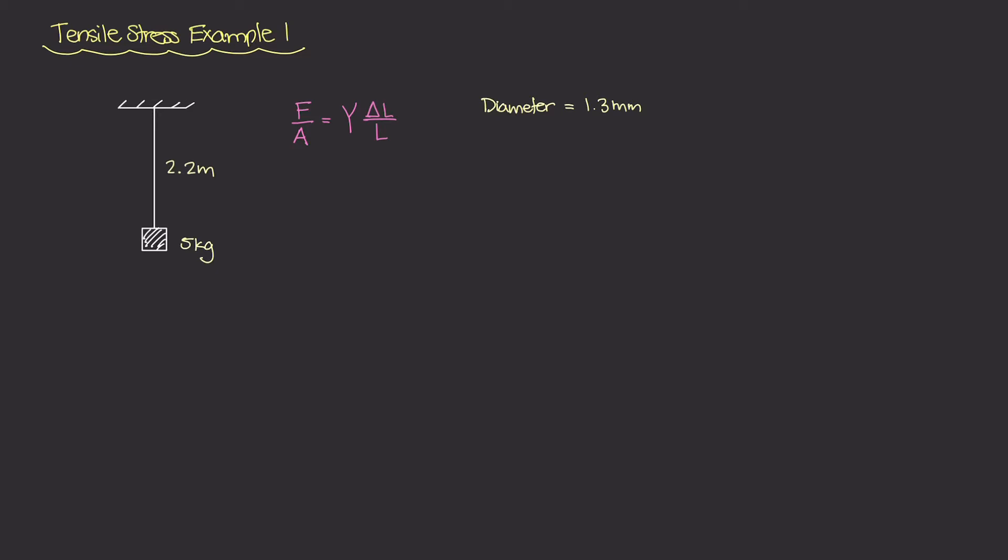Now when this mass is attached to this wire, the problem also states that it stretches, the wire stretches by a very tiny amount. And that tiny amount is 1 millimeter. So the original length of the wire is 2.2 meters, but when we attach this mass to it, it stretches the wire by an additional 1 millimeter. And the question is asking what is the Young's modulus for this wire?